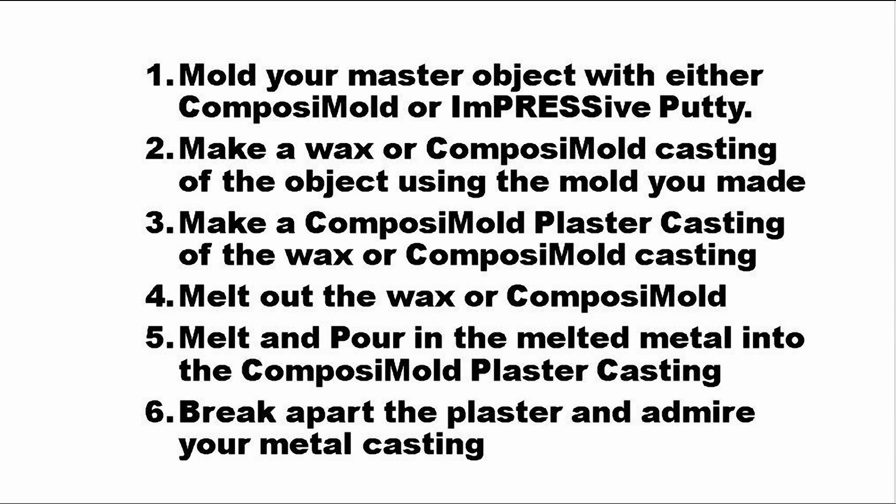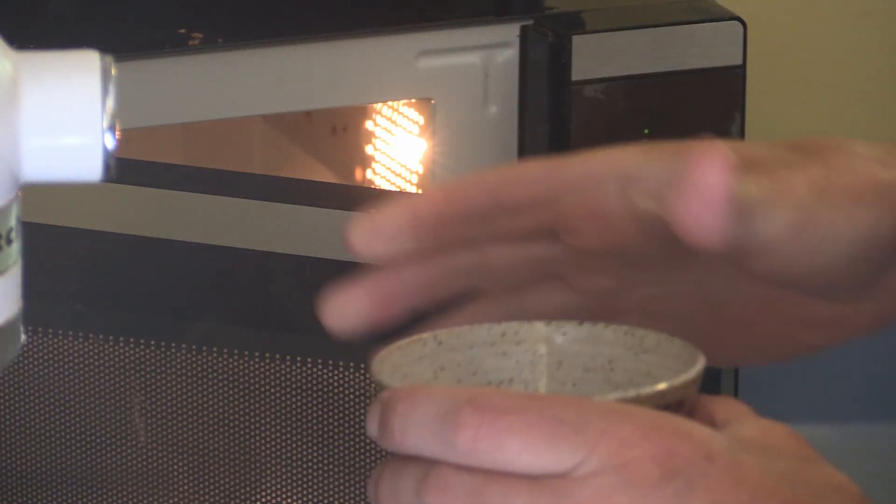So you can then make a disposable plaster mold that can handle the heat of the metal when you pour it in. It's much easier than that sounded so let's get started.